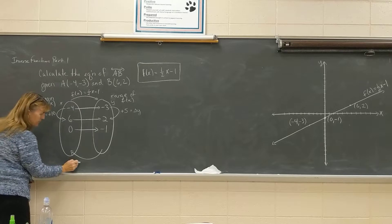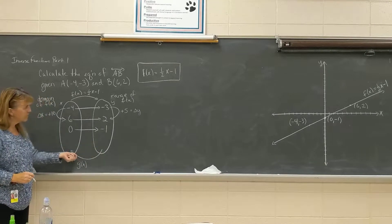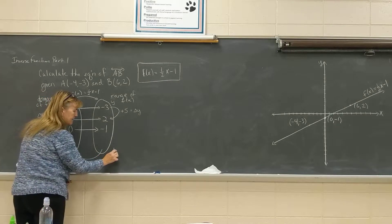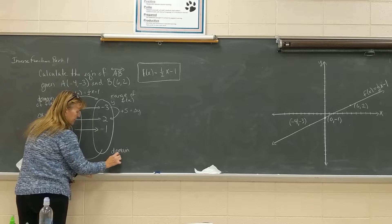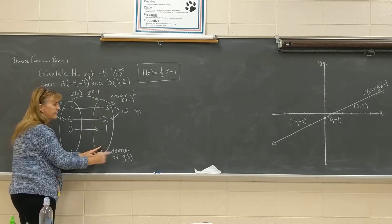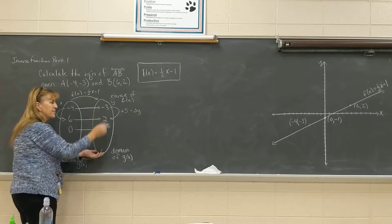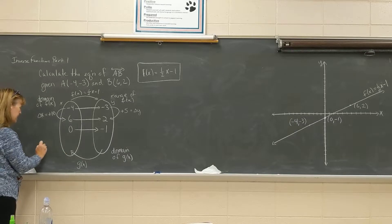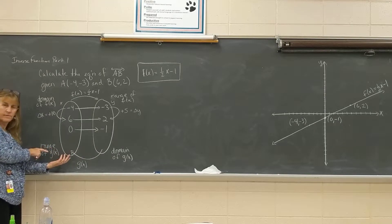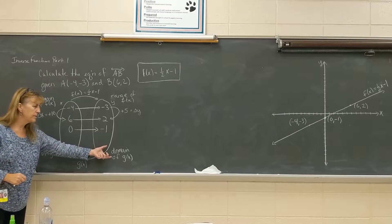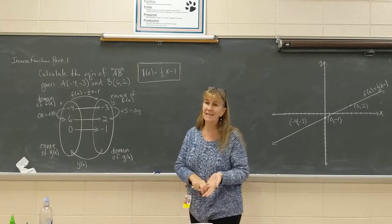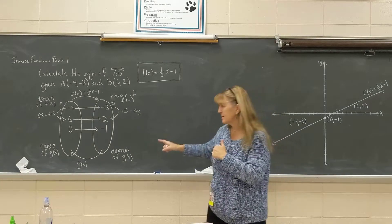When I want the function to go backwards, I'm going to call this g of x. The set on my right, which used to be the range of f of x, is going to become the domain of g of x. All these numbers are my input values to g, meaning these values become the x's for g of x. This is where g of x will land — the range of g. The domain of f is going to become the range of g, and the range of f becomes the domain of g. It's like they switch places.